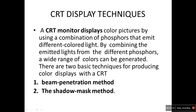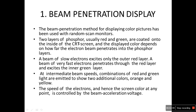CRT display techniques: a CRT monitor displays color pictures by using a combination of phosphors that emit different colored lights. By combining emitted lights from different phosphors, a wide range of colors can be generated. There are two basic techniques for producing color display with CRT: the beam penetration method and the shadow mask method.